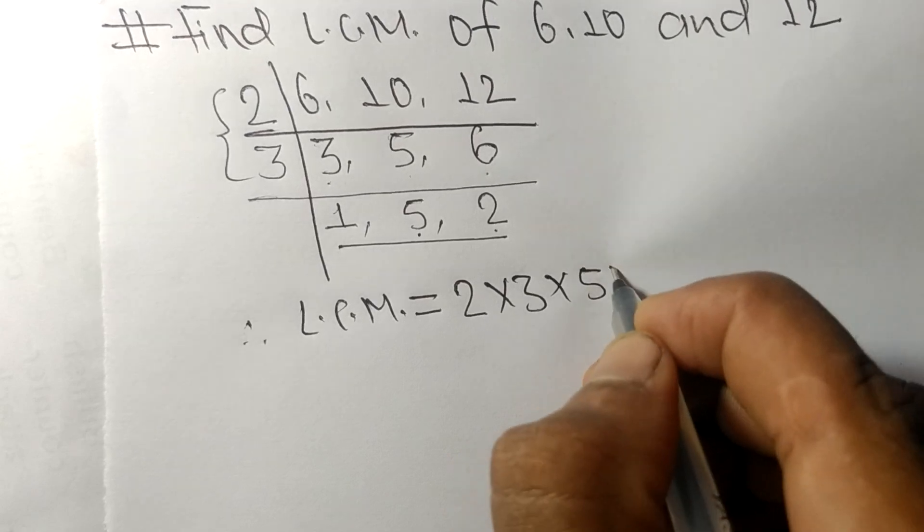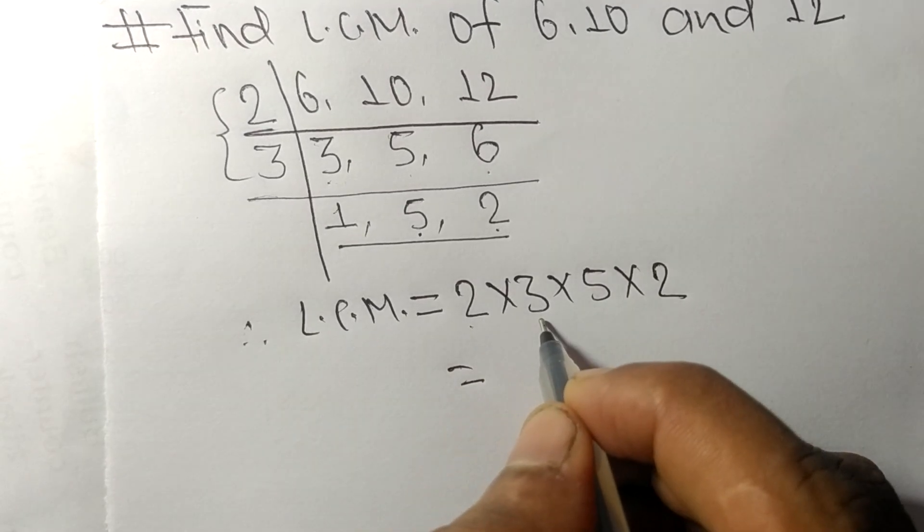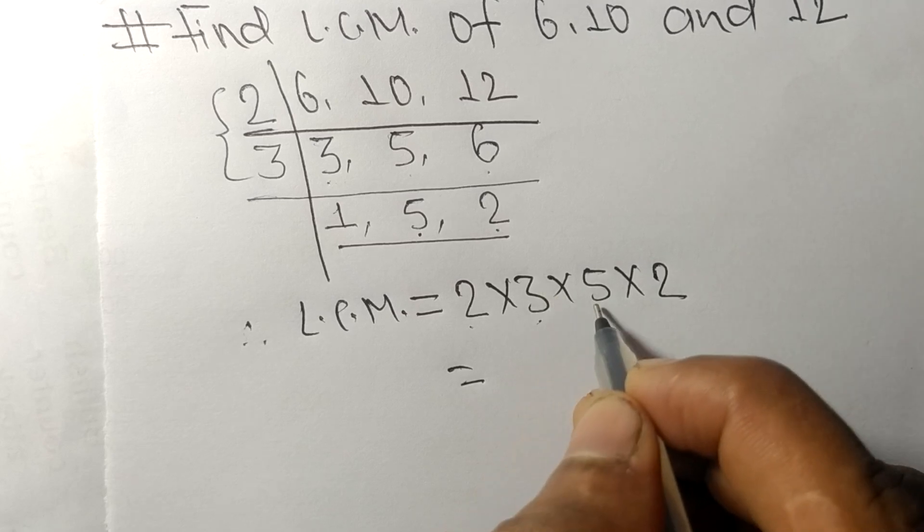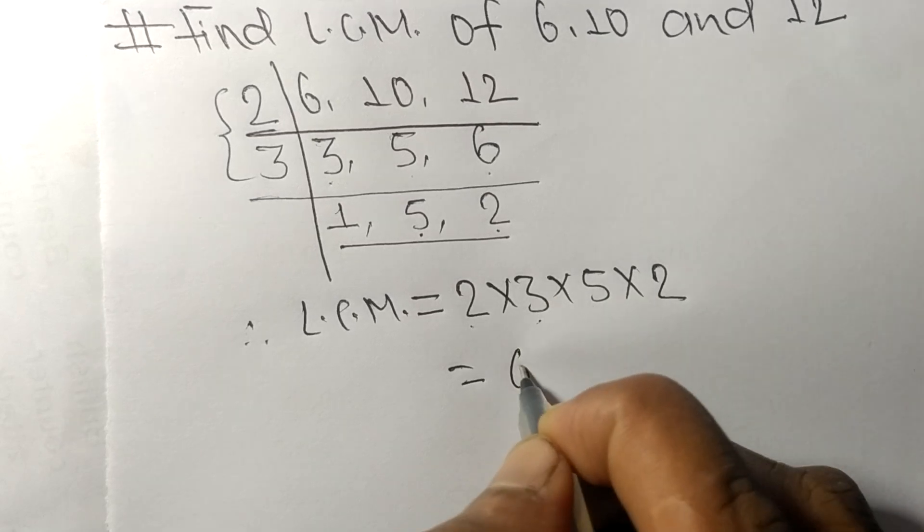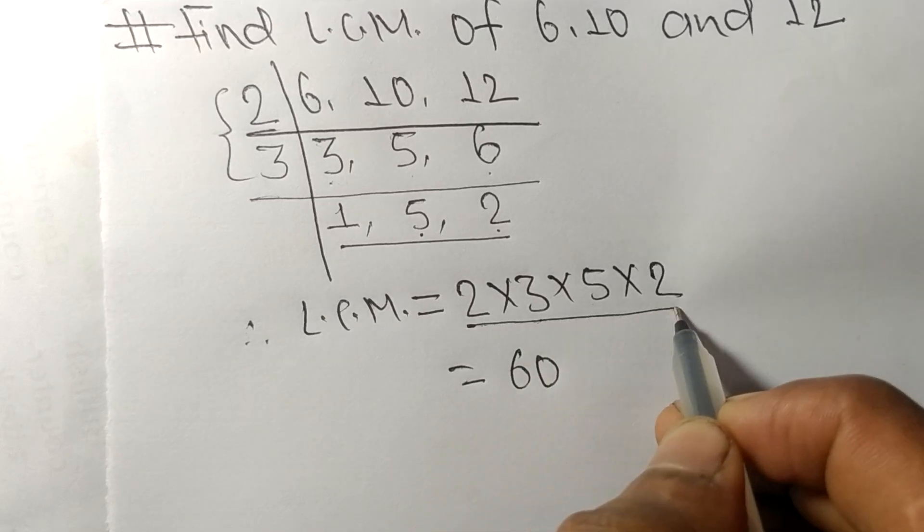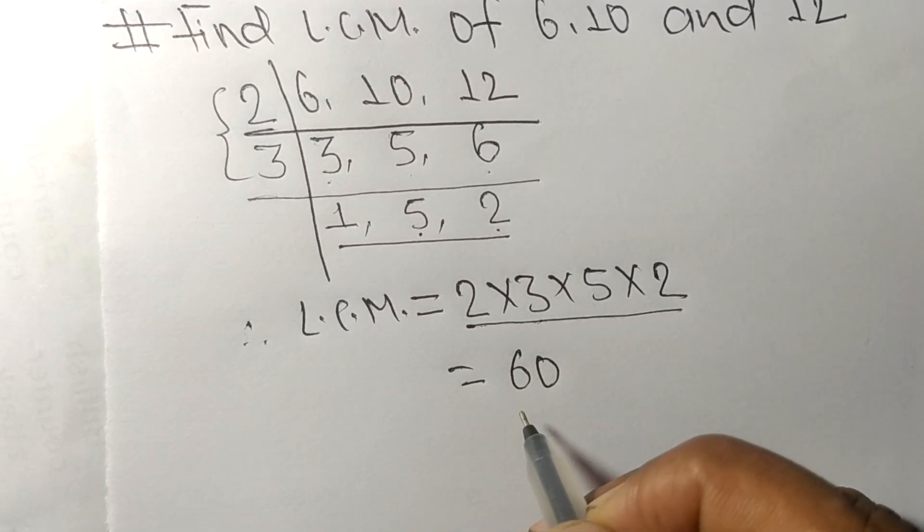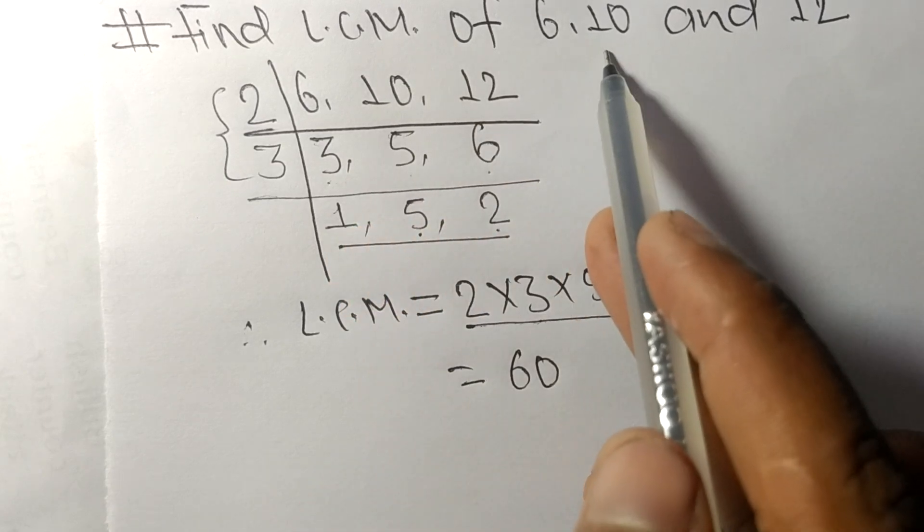So 2 times 3 equals 6, 6 times 5 equals 30, and 30 times 2 equals 60. By multiplying all these numbers we get 60. Therefore, 60 is the LCM of 6, 10, and 12.